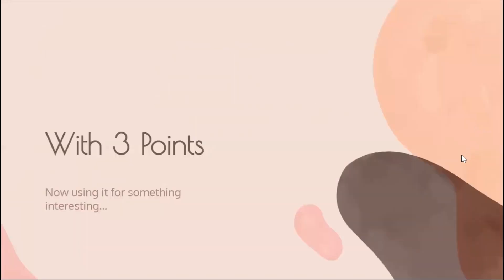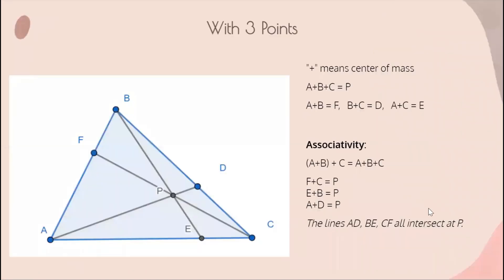Okay, so now we have to actually use this for something with geometry. And in order to make this actually interesting, let's use 3 points instead of 2. Okay, so let's just say the plus symbol means center of mass, because the center of mass of 2 points is like adding them. So in this case with 3 points, we have that P is the center of mass of A, B, and C. F is the center of mass of A and B. D is the center of mass of B and C. And E is the center of mass of A and C.